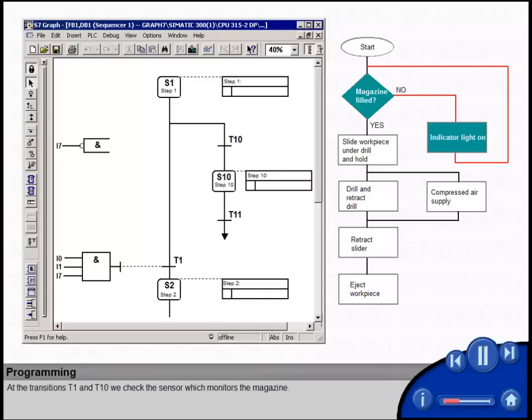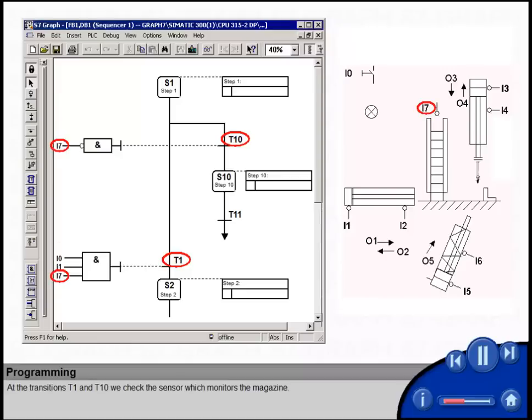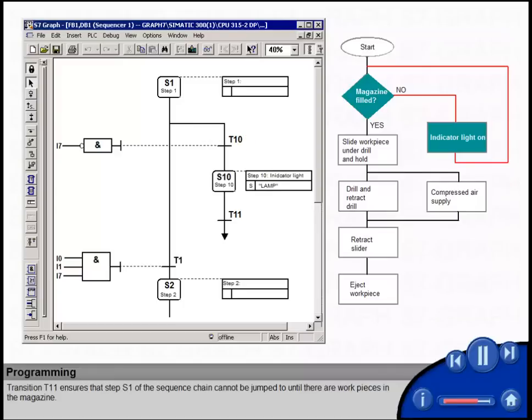At the transitions T1 and T10, we check the sensor which monitors the magazine. If no workpieces are left in the magazine, transition T10 is true and an indicator light is switched on. Transition T11 ensures that step S1 of the sequence chain cannot be jumped to until there are workpieces in the magazine.